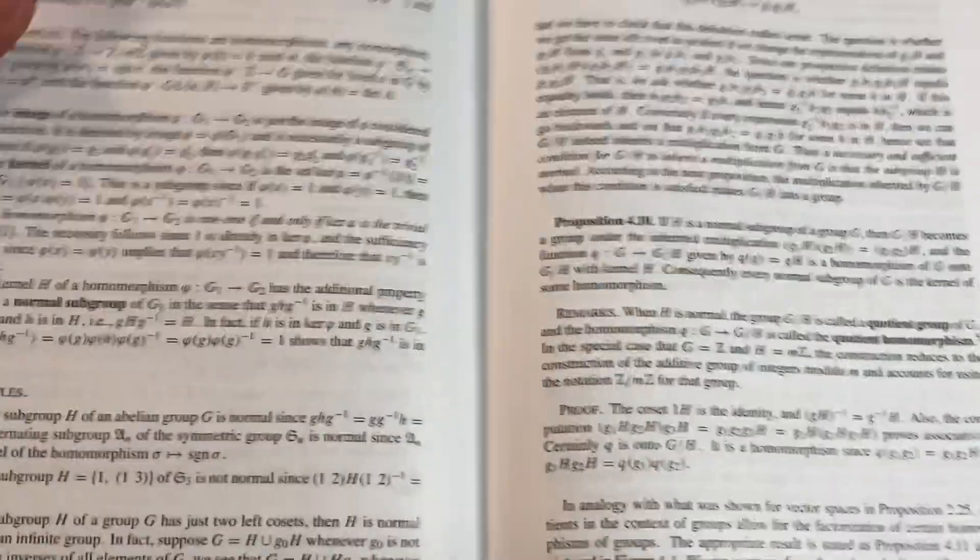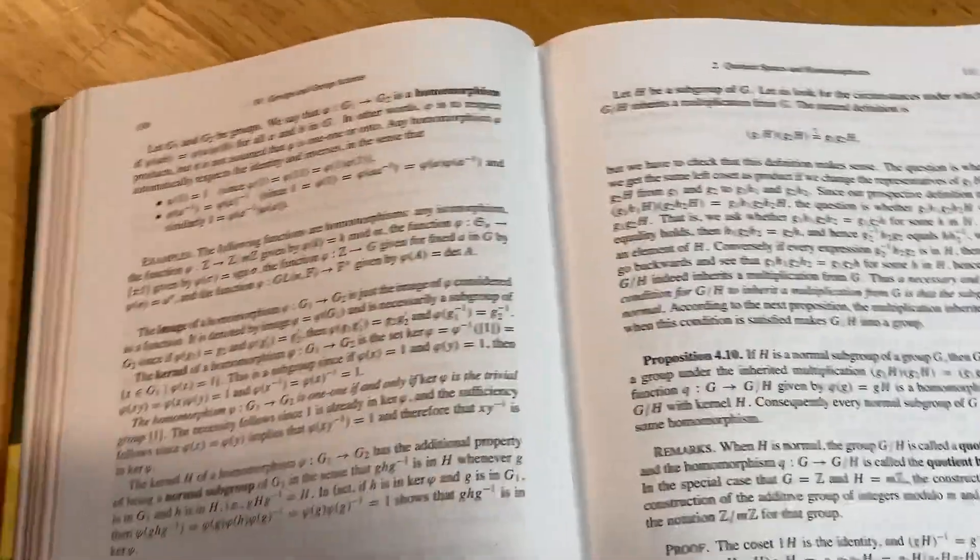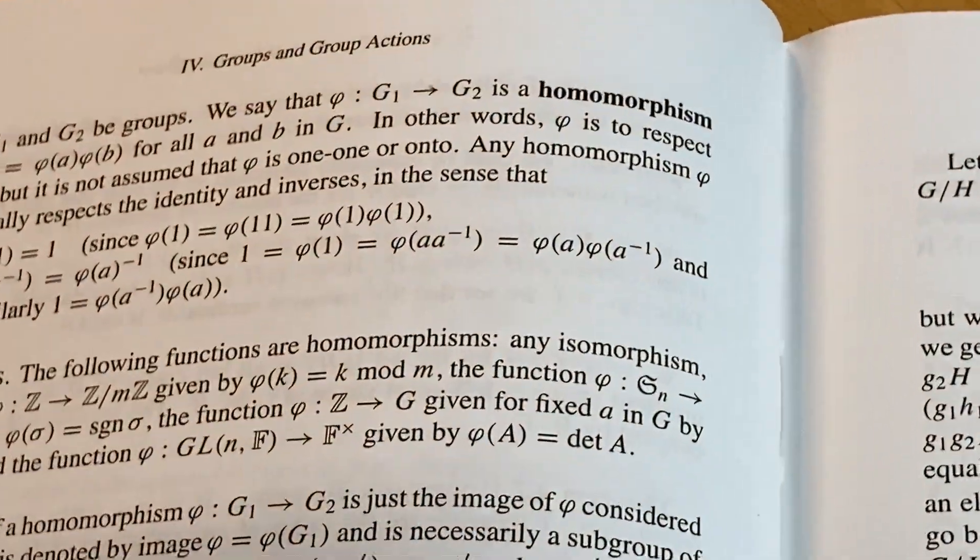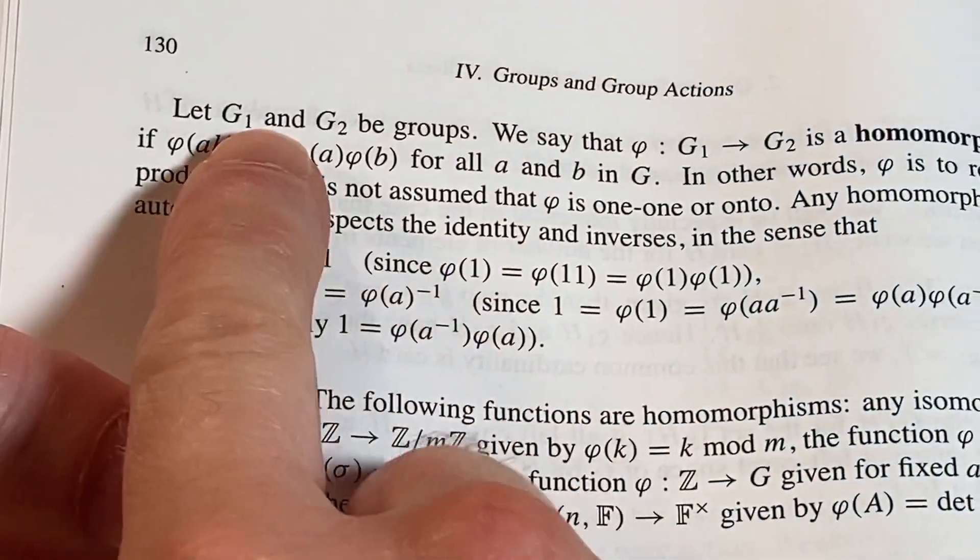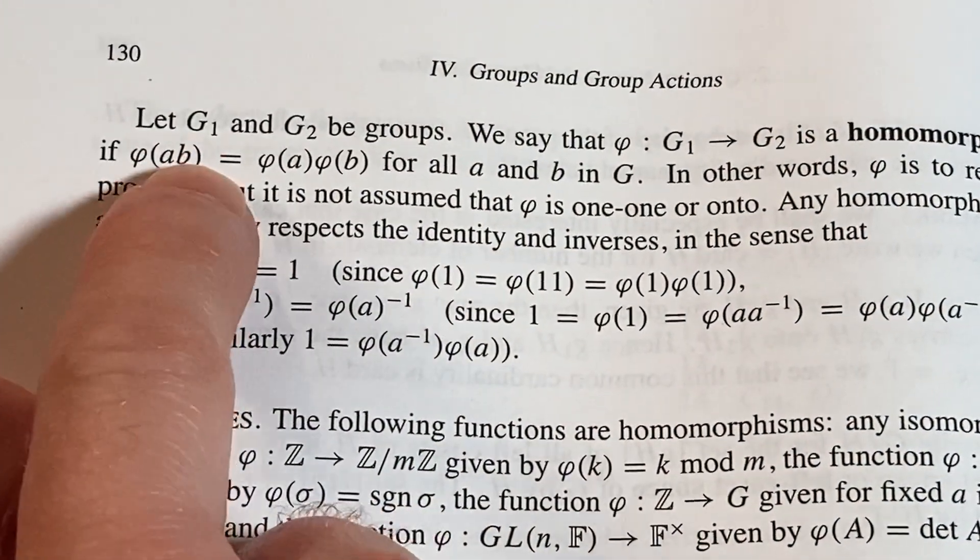So it preserves the operation. Let me just try to explain that. So you see how it says phi(ab)—this product a times b that's taking place in G₁. So if you multiply two elements in G₁ and you take that product under phi, the image is the product of phi applied to those elements in G₂.